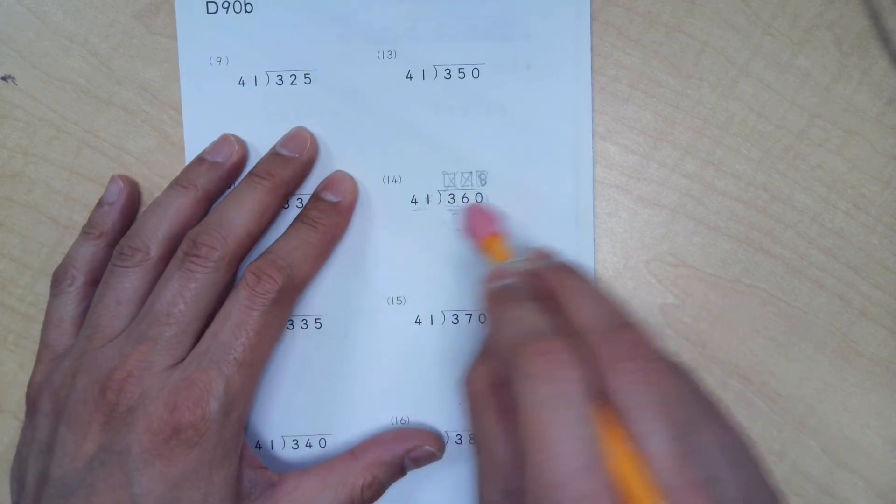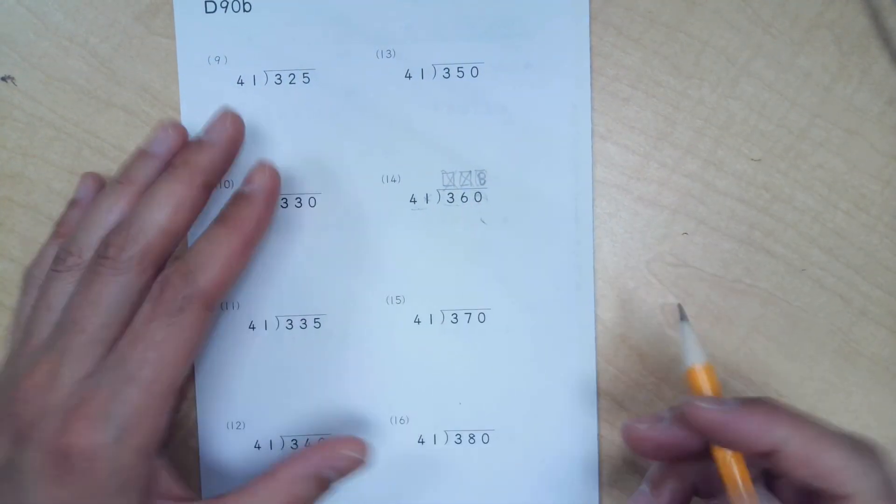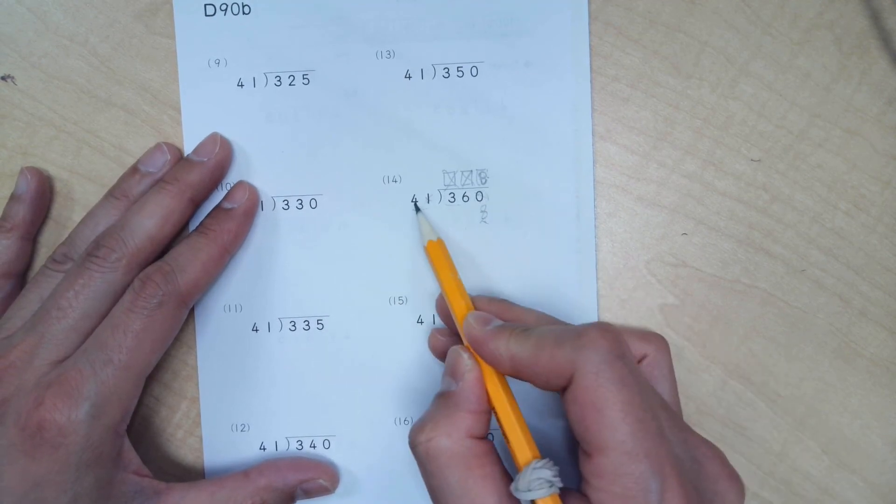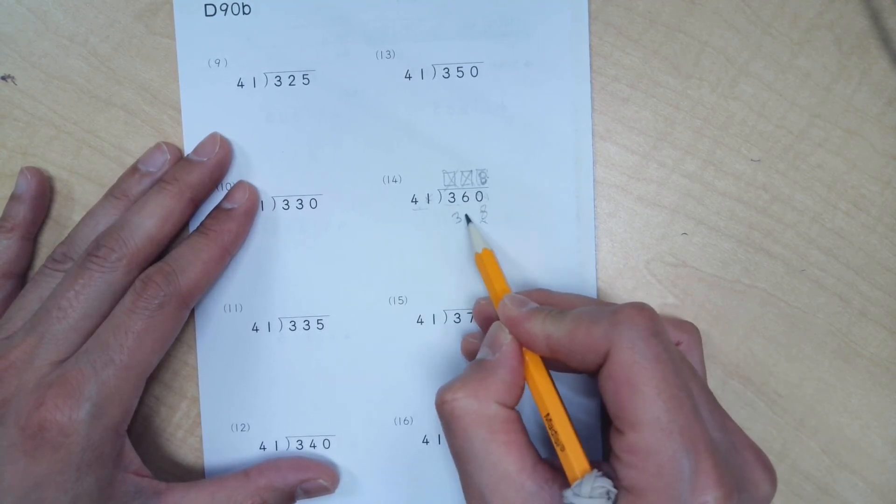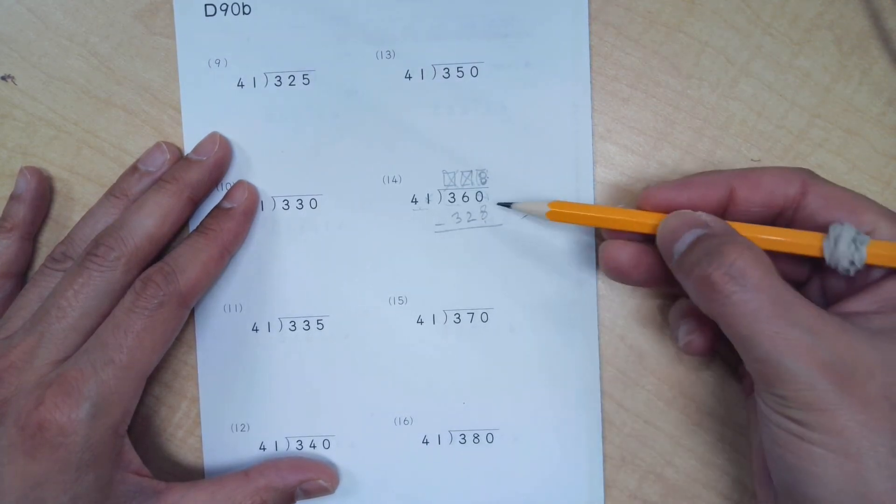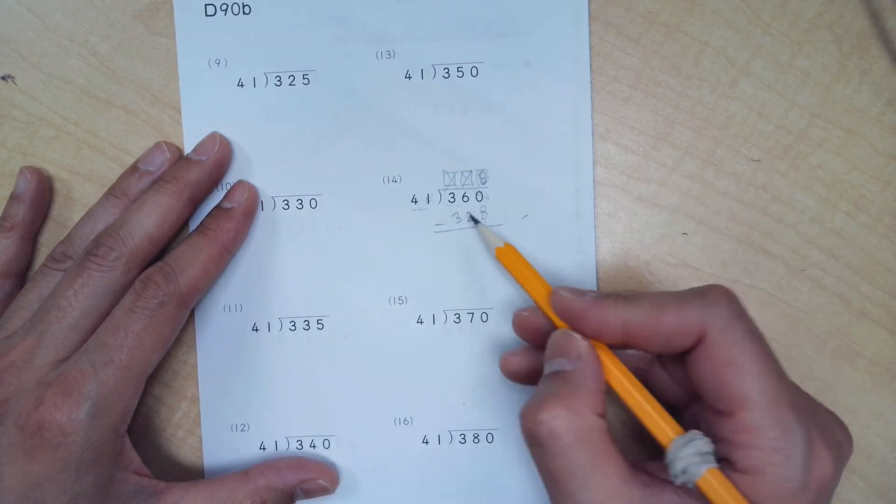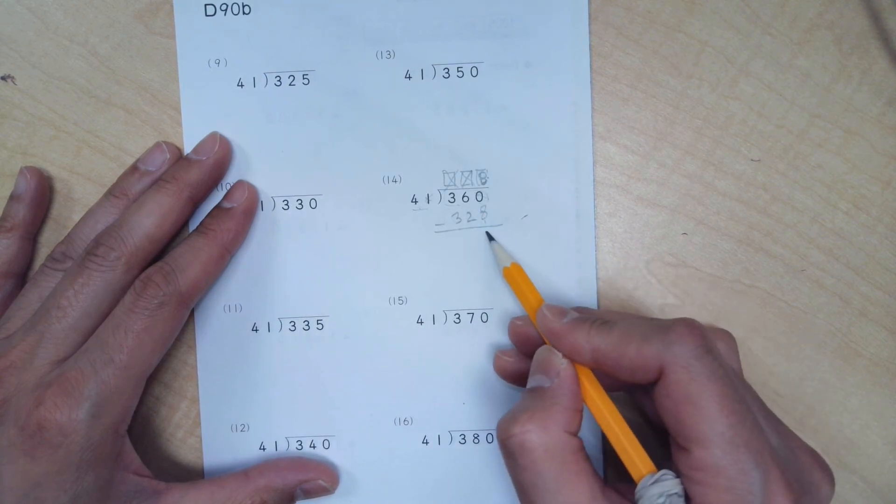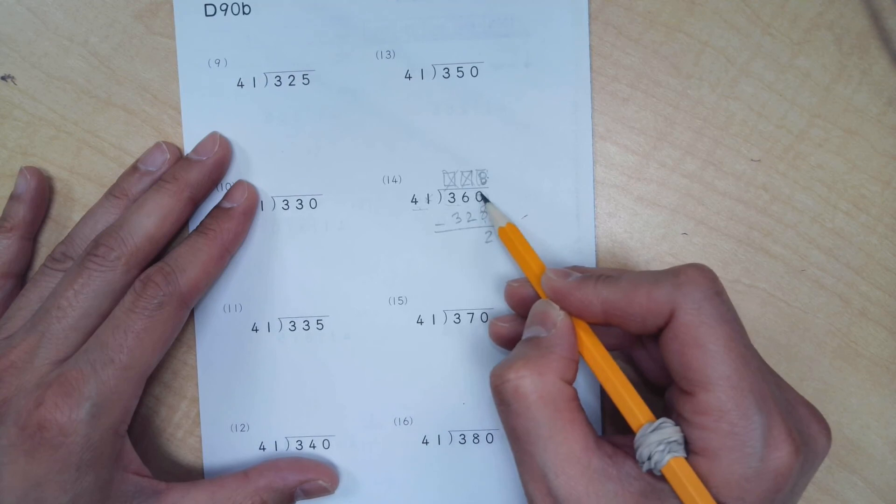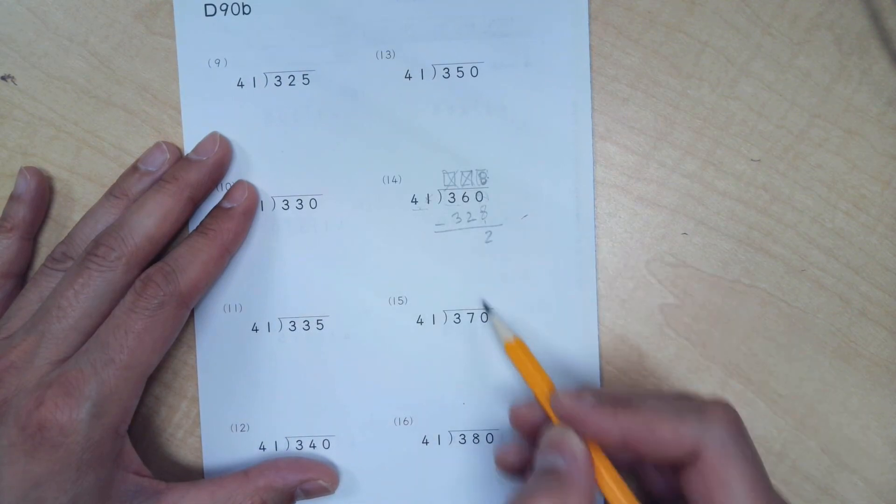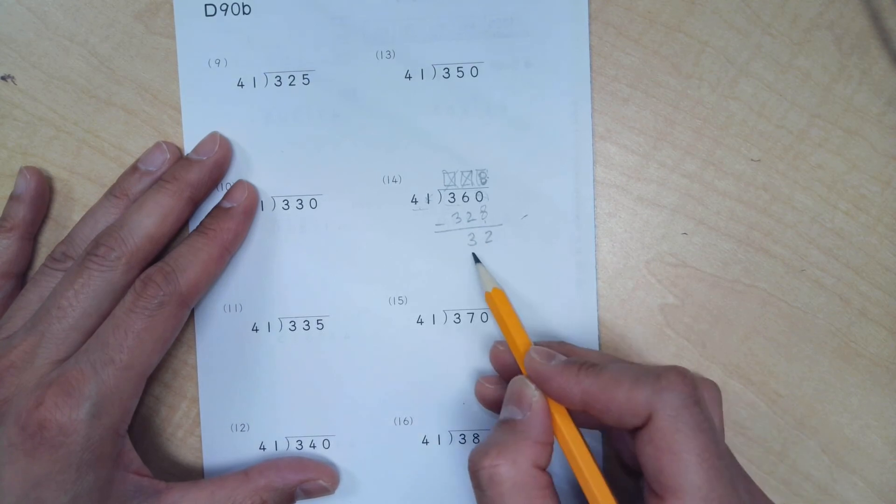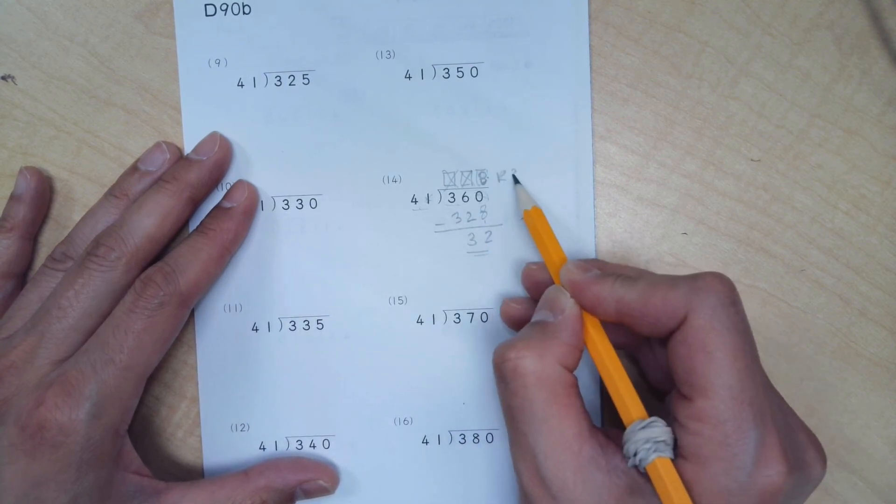And we will do our multiplications again. What's 1 times 8? That's an 8. What's 4 times 8? That's 32. That looks really close. So let's do our subtractions and see what happens. What's 0 minus 8? We can't do that. So we borrow 1 from the 6. So that's 2. And 6 becomes a 5. Since we let 0 borrow 1 from it. So it will be 5 minus 2 is 3. And 3 minus 3 is nothing. So the remainder is 32.